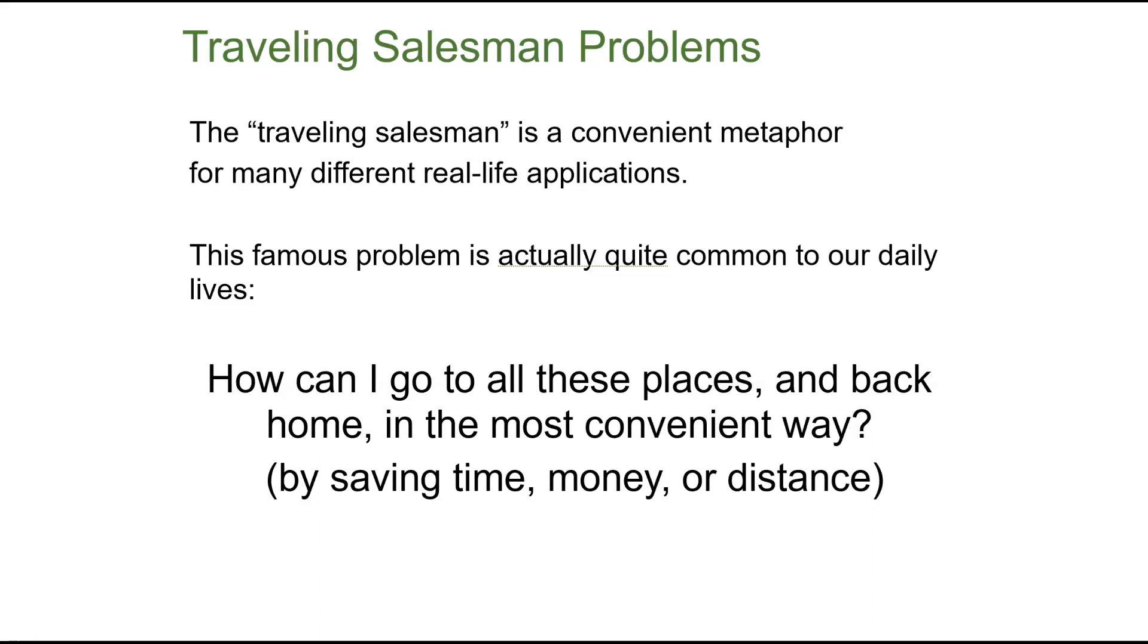Maybe you want to save time, maybe you want to save money, maybe you want to save miles. So these kinds of problems - grocery store, bank, post office, work, movies - all these kinds of decisions we make, we call them traveling salesman problems, and we deal with them all the time in our life. So in this module, we're going to be talking about the best way to make those decisions.